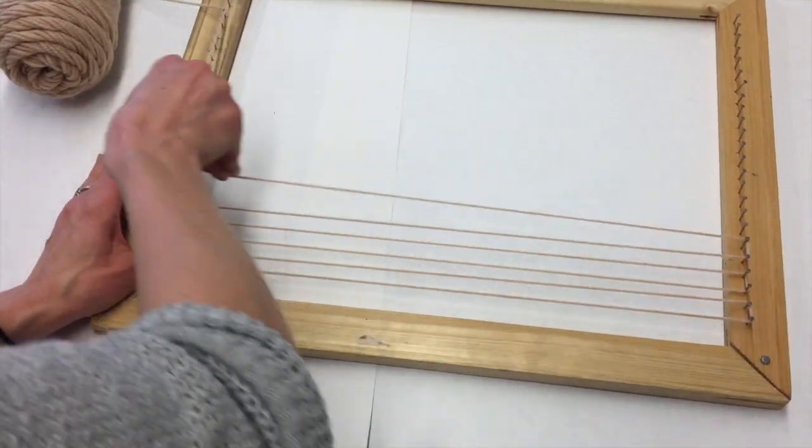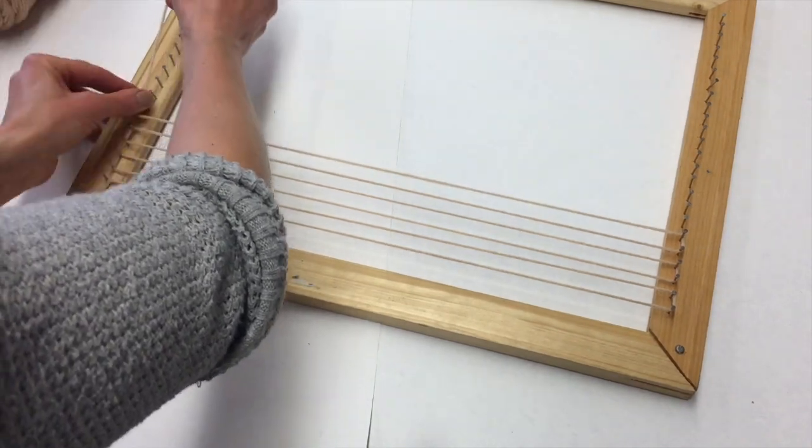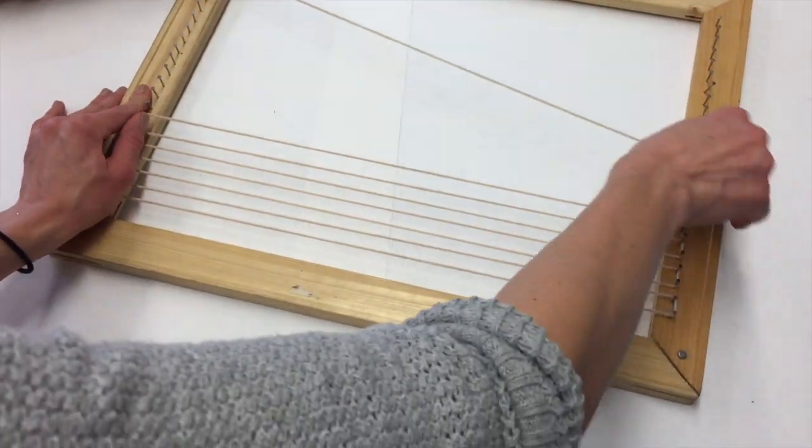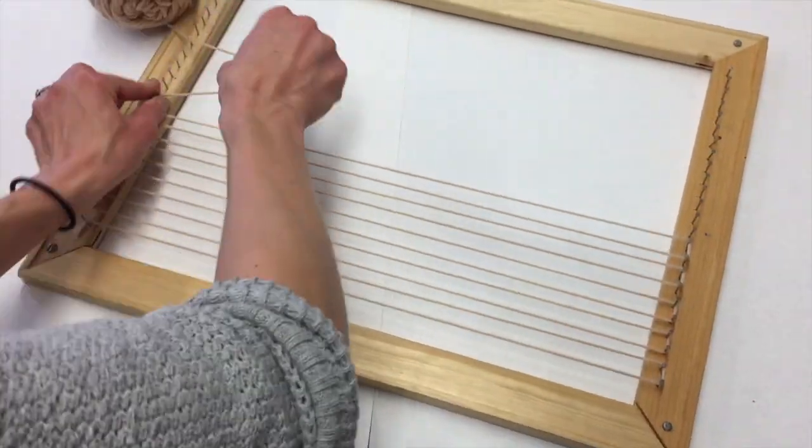As you continue to wrap, make sure that you keep tension on your warp string. You don't want these strings to be too loose, otherwise it will be very difficult to weave. You'll just continue to wrap each nail until you're all the way across your loom.